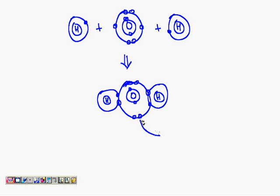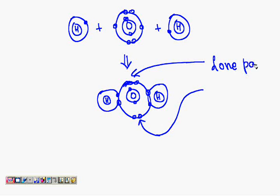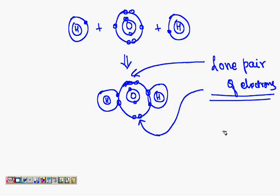You can see over here there are two more pairs of electrons which are not shared at all. These are known as lone pairs of electrons. These lone pairs will have the ability to attract a positive charge.